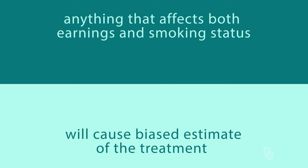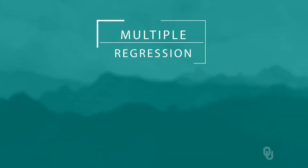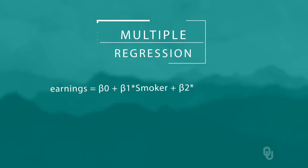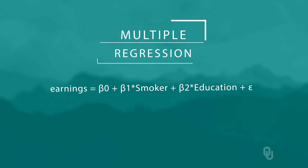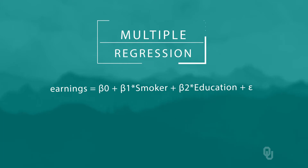At this point, you might be thinking we should just run a multiple regression with earnings on the left as our dependent variable and smoking status and education on the right as explanatory variables. That way, we can determine the effect of smoking on earnings controlling for education. Well, if education was the only factor affecting the outcome that also influenced selection into treatment, this regression approach would work.